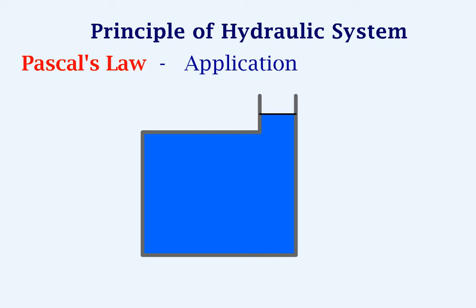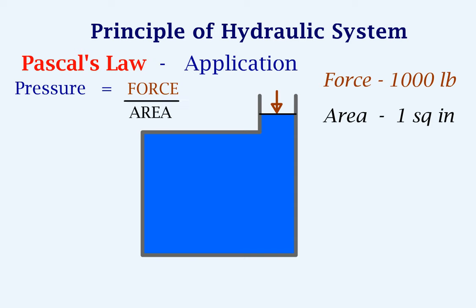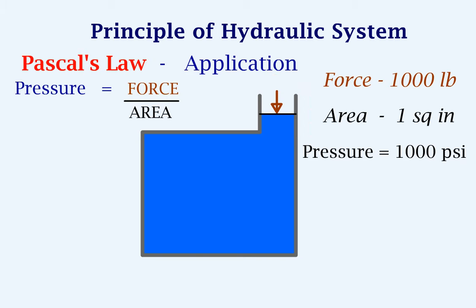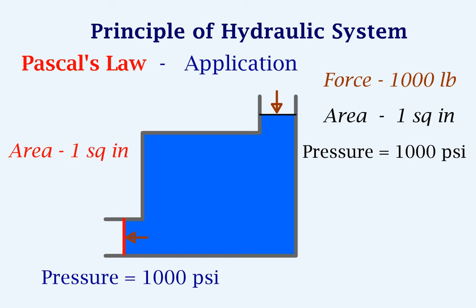Now let's see the application of Pascal's law. First, we consider a force acting on the fluid at this section. Let this force be 1000 pounds. The cross sectional area at this section is 1 square inch. Pressure is defined as force by area, so we get the pressure at this section as 1000 pounds per square inch, or 1000 psi. Now let us consider another section here having the same cross sectional area of 1 square inch. The pressure would be the same 1000 psi, and hence the force we get in this section would be 1000 pounds.